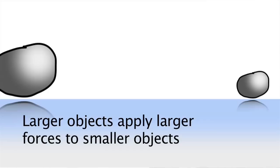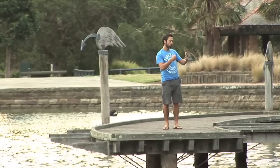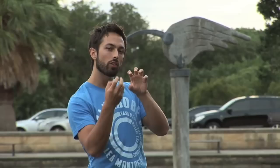Derek's third incorrect law of motion is that larger objects apply larger forces to smaller objects. When a large truck slams into a car on a highway, the force of the truck on the car is much greater than the force of the car back on the truck. Or, if you think about the Earth and the Moon, the force with which the Earth attracts the Moon is greater than the force with which the Moon attracts the Earth. But remember, this is an incorrect law of motion.